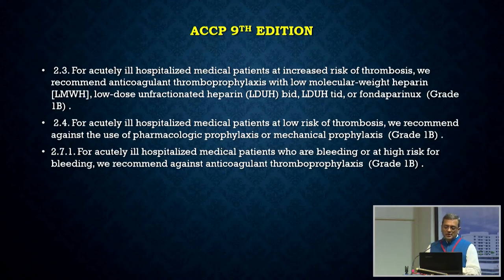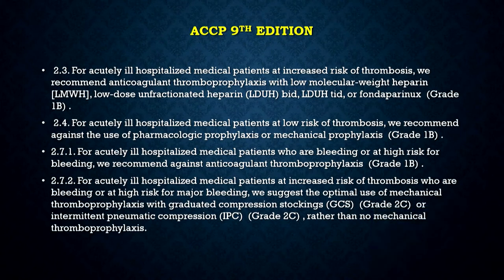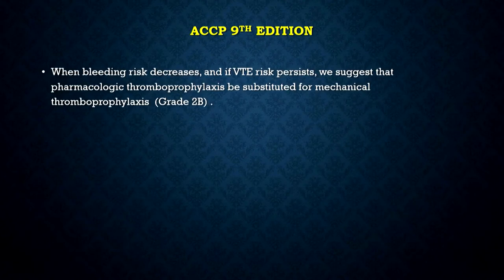Just because the patient is in the ICU doesn't mean thromboprophylaxis has to be given. If you risk stratify and find it's not necessary, please don't give it — you would rather avoid a drug than give it unnecessarily. For acutely ill hospitalized medical patients who are bleeding or at higher risk for bleeding, we recommend against any form of anticoagulation. You can use the mechanical one. For patients at risk of thrombosis who are bleeding or at high risk of major bleeding, we suggest mechanical thromboprophylaxis with graduated compression stockings or IPC. Once the bleeding risk decreases and VTE risk persists, go back to pharmacological thromboprophylaxis.